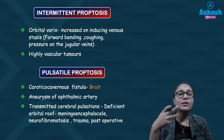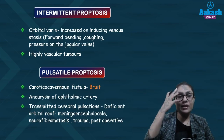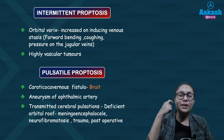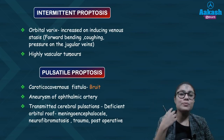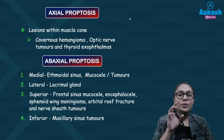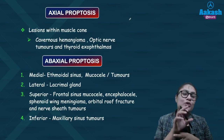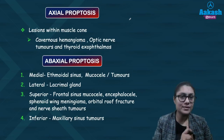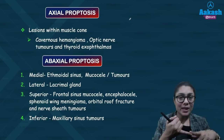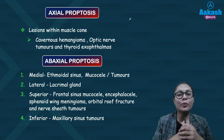Other causes of pulsatile proptosis include aneurysm of the ophthalmic artery, and transmitted pulsations in cases of deficient orbital roof with meningoencephalocele, neurofibroma, or post-operative or post-trauma defects. Axial proptosis is generally seen when a tumor is within the muscular cone or just behind the globe, causing forward protrusion along the visual axis. Such lesions include cavernous hemangioma, optic nerve tumors, and thyroid ophthalmopathy.